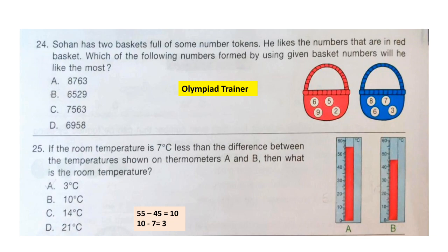Question 25: If the room temperature is 7 degrees less than the difference between the temperatures shown on thermometer A and B, then what is the room temperature? The temperature on thermometer A is 55 degrees and on B is 45 degrees, so the difference is 10. Room temperature is 7 degrees less than the difference, so 10 minus 7 equals 3. The correct answer is option A: 3 degrees Celsius.